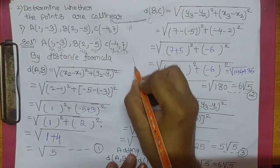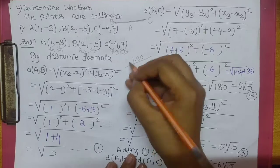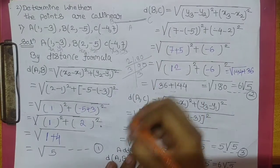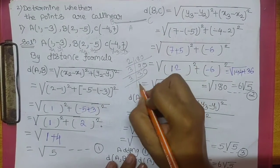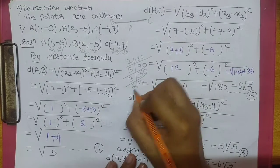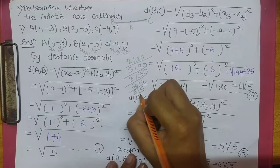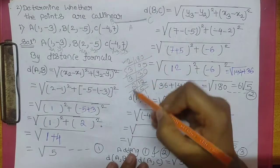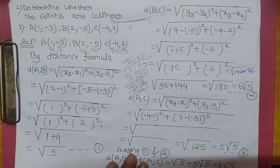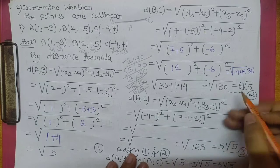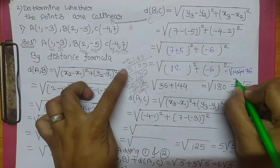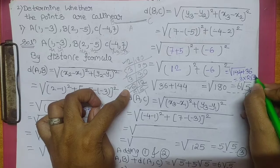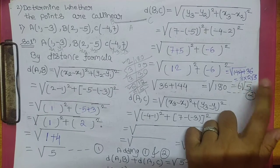Hum 180 ka square root find karenge. 180 = 2 × 9 × 10 = 2 × 9 × 2 × 5 = 2 × 3 × 3 × 2 × 5. Yeh 3 ka pair ho gaya, yeh 2 ka pair ho gaya. Jis ka pairing possible hai usko square root ke bahar likhenge. Pairing mein 3 hai, phir 2 hai, but 5 ka pair nahi hai, usko square root mein. Answer: 6 square root of 5.